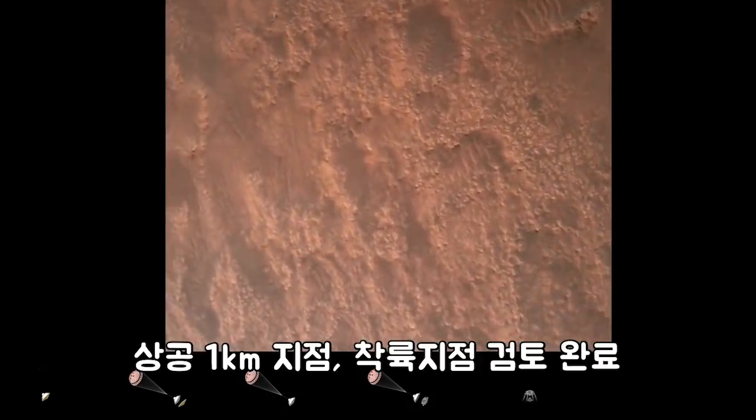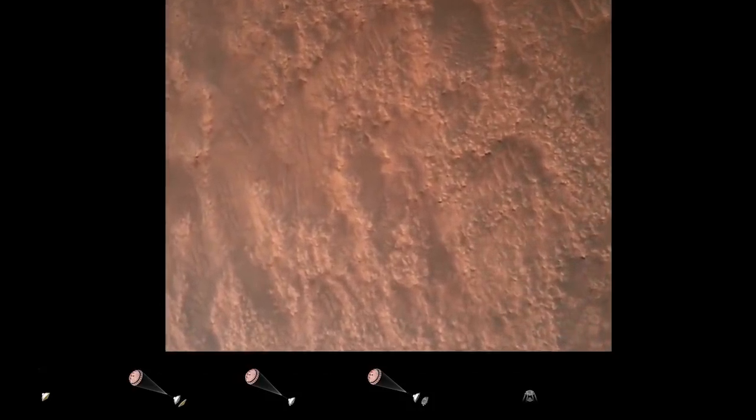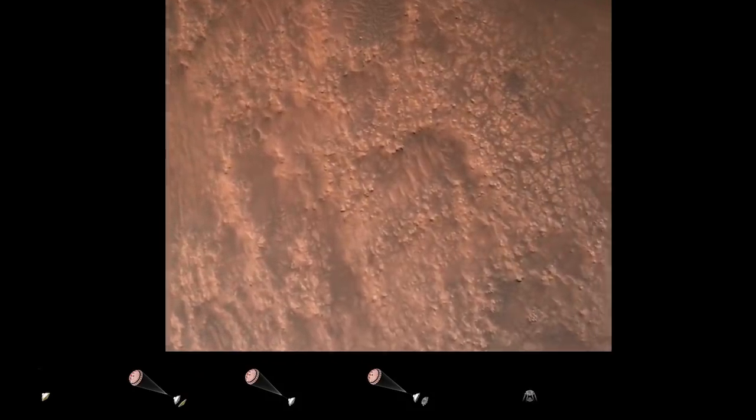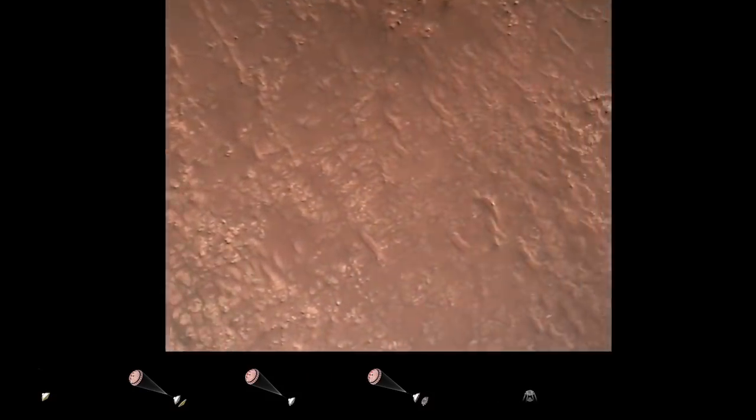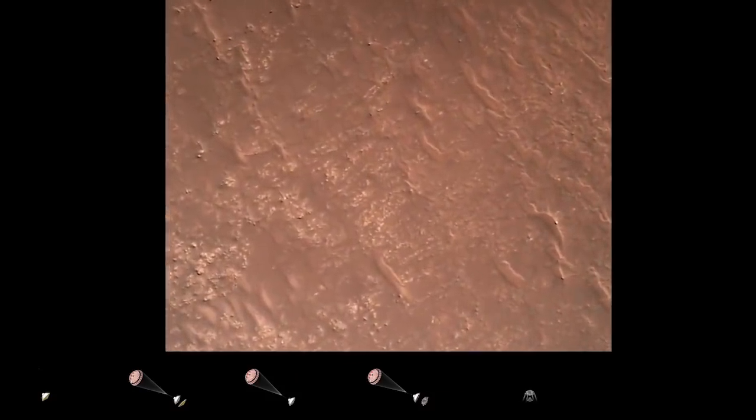TRN safety, Bravo. We have completed our terrain relative navigation. Current speed is about 30 meters per second at an altitude of about 300 meters off the surface of Mars.